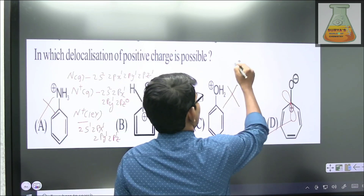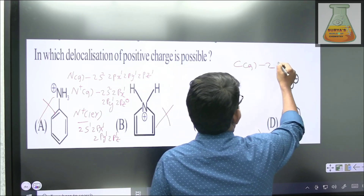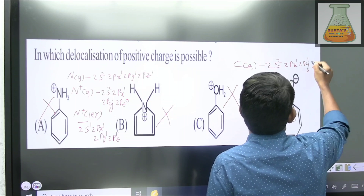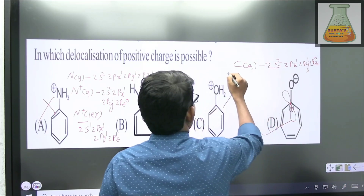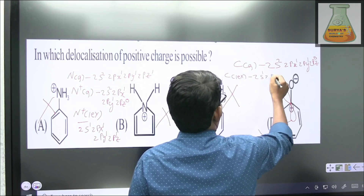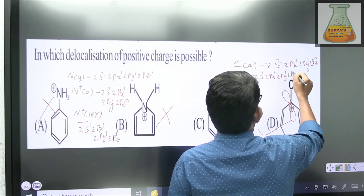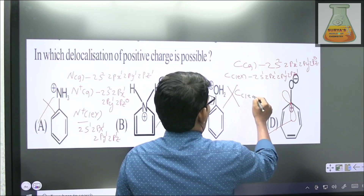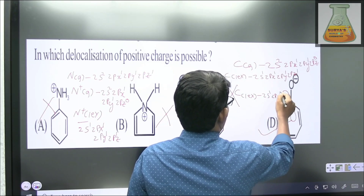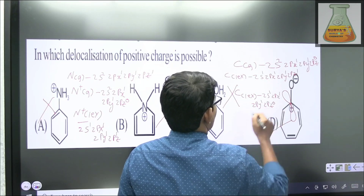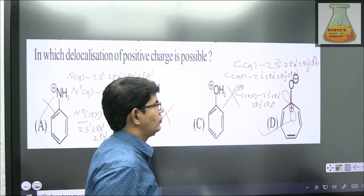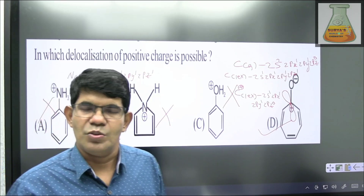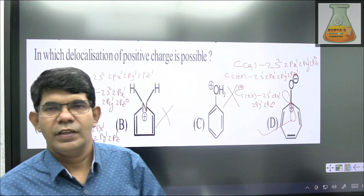In carbon's ground state: 2s² 2px¹ 2py¹ 2pz⁰. In the first excited state: 2s¹ 2px¹ 2py¹ 2pz¹, giving covalency 4. If it then loses one electron, you have 2s¹ 2px¹ 2py¹ 2pz⁰ with a positive charge — there is an empty orbital. When this empty orbital is available, carbon can participate in resonance. So the fourth option is correct.